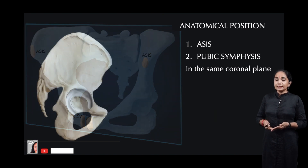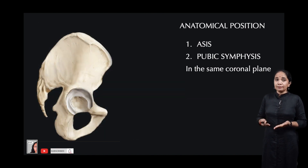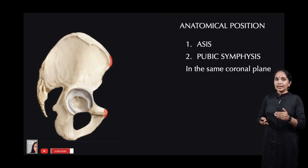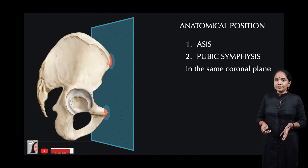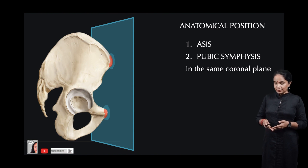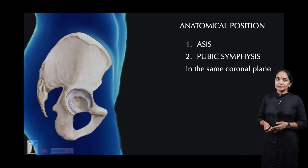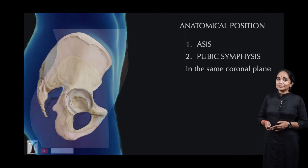When you place it during your exams, try to hold it against a plane surface such as a table or a wall and you will be safe. Make sure that the ASIS and the pubic symphysis are in the same plane — that is the anatomical position of the pelvis, and this is how the pelvis looks in the human body. Now let's look at the subdivisions of the pelvis.